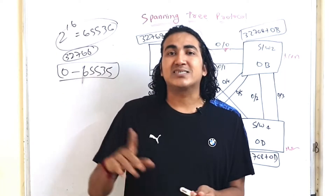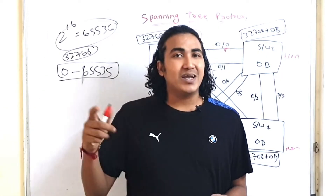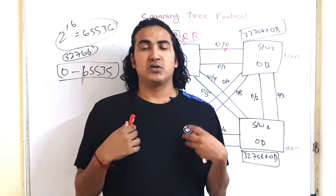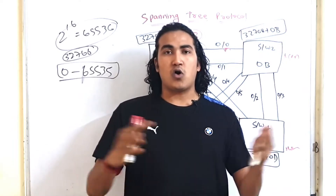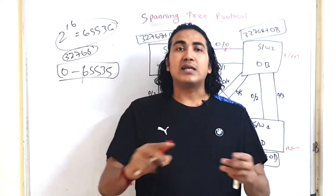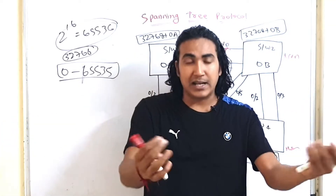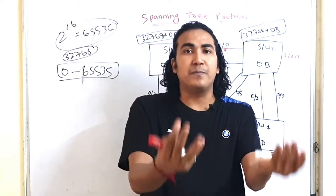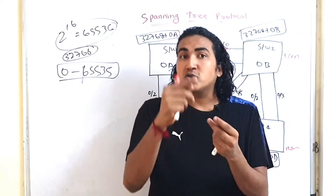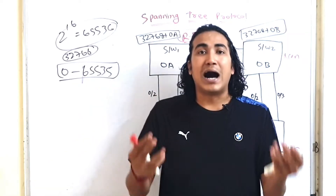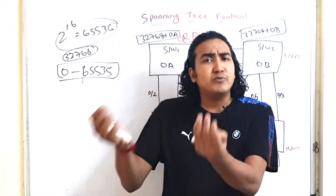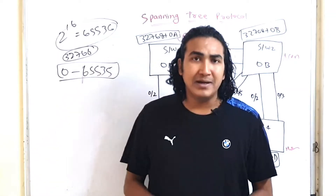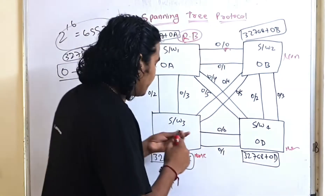DP is the port which transmits superior BPDU, and RP is the port which receives superior BPDU. Since the root bridge sends superior BPDUs, all ports of the root bridge become DPs. The non-root switches receive those BPDUs, so the receiving interface on those switches becomes the RP.